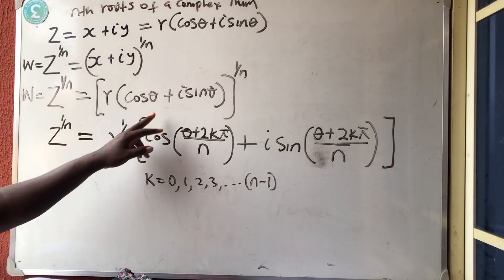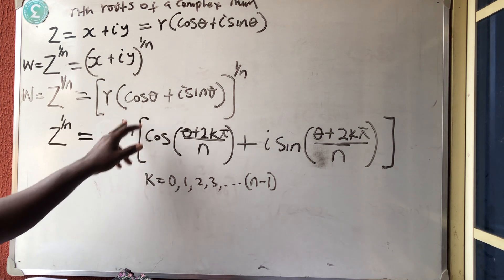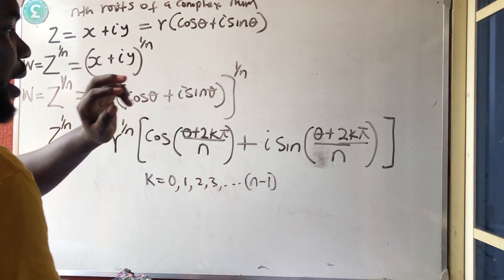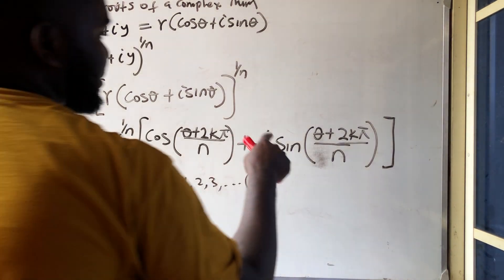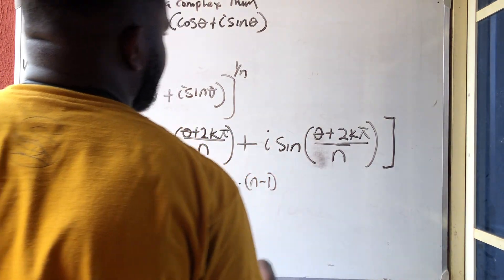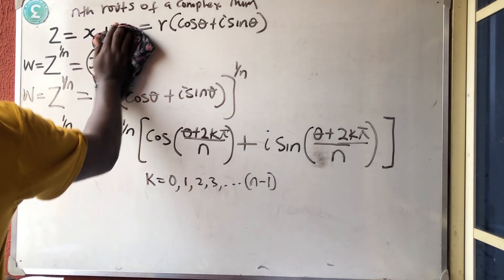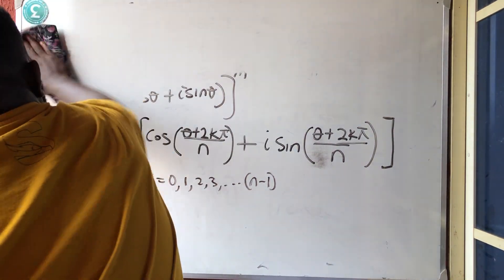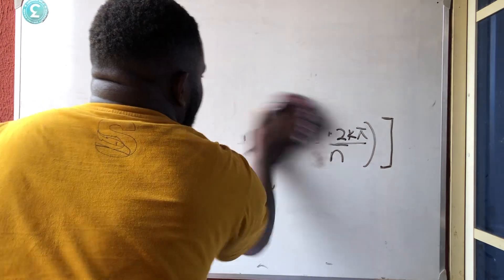The formula is: R raised to power 1 over n, bracket cos of (theta plus 2k pi over n) plus i sine of (theta plus 2k pi over n). So let us solve one or two questions and you will understand what I am saying.